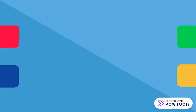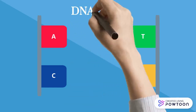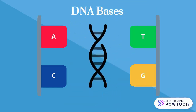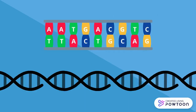Everything starts with the four building blocks of DNA, also known as bases or nucleotides. These four bases are connected in very precise order to make up DNA strands. A specific collection of these DNA molecules or bases can be called a gene.